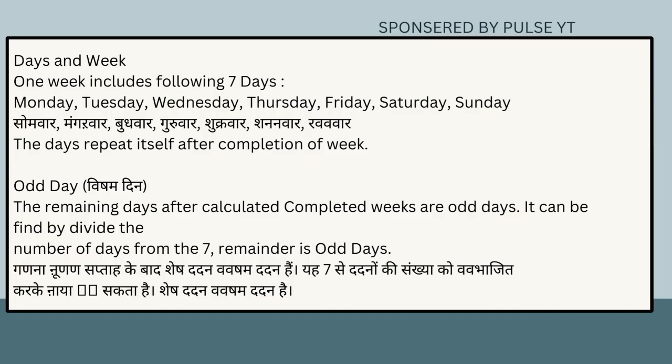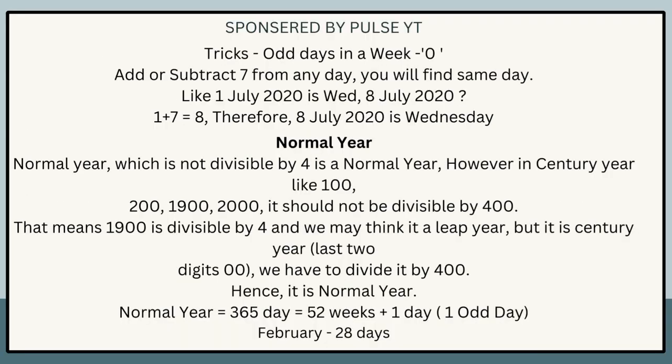A week includes the following seven days: Monday, Tuesday, Wednesday, Thursday, Friday, Saturday, Sunday. The days repeat after completion of a week. Odd days are the remaining days after calculated completed weeks. The number of days divided by 7, the remainder gives odd days. Adding or subtracting 7 from any date gives the same day — for example, 1st July 2020 is Wednesday, so 8th July 2020 is also Wednesday.